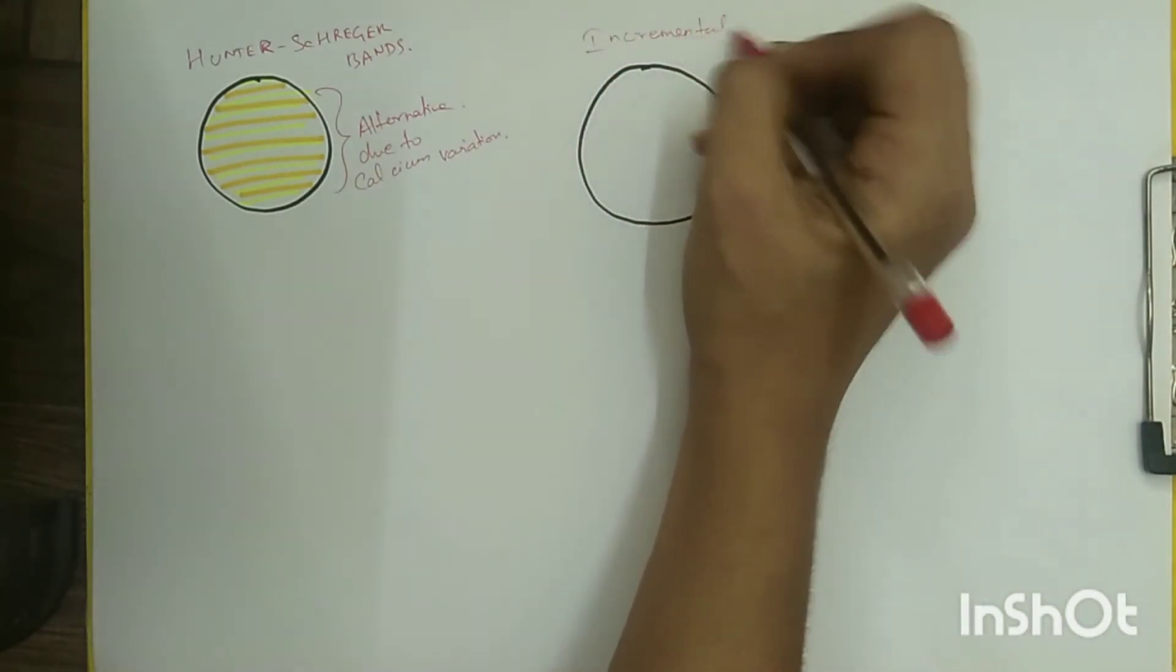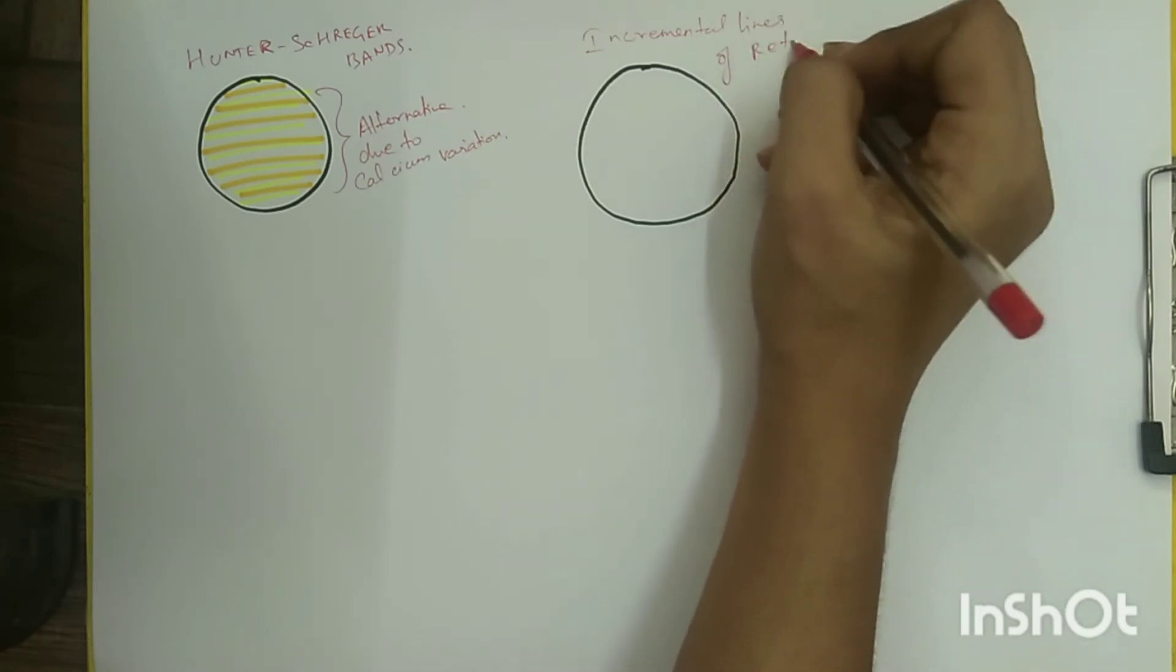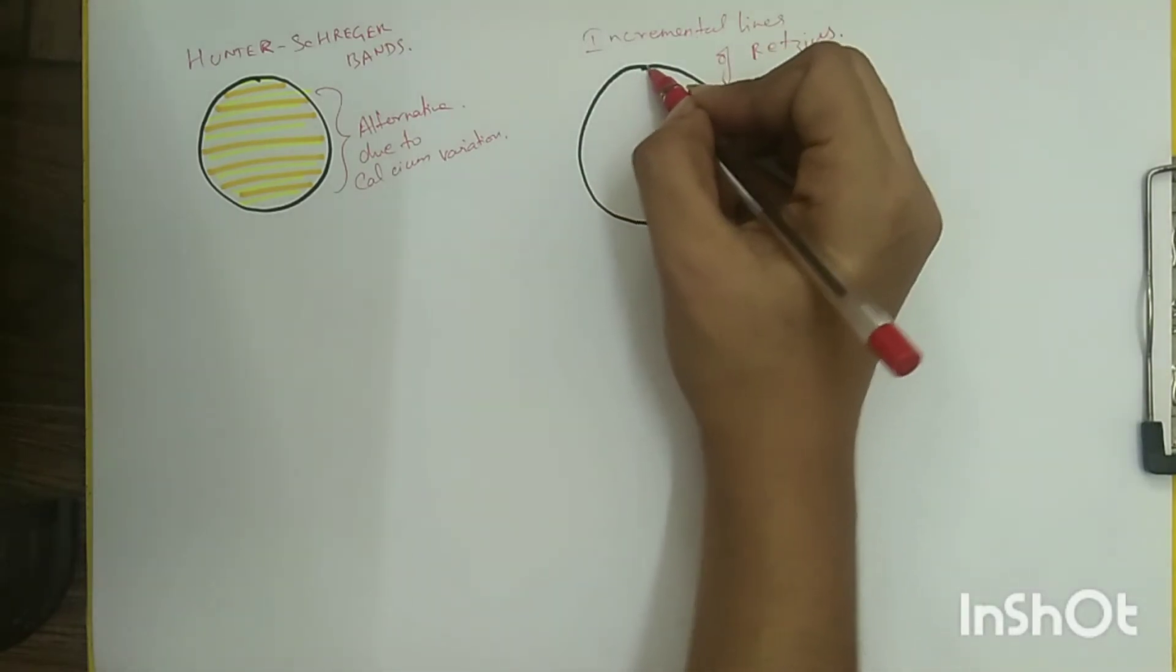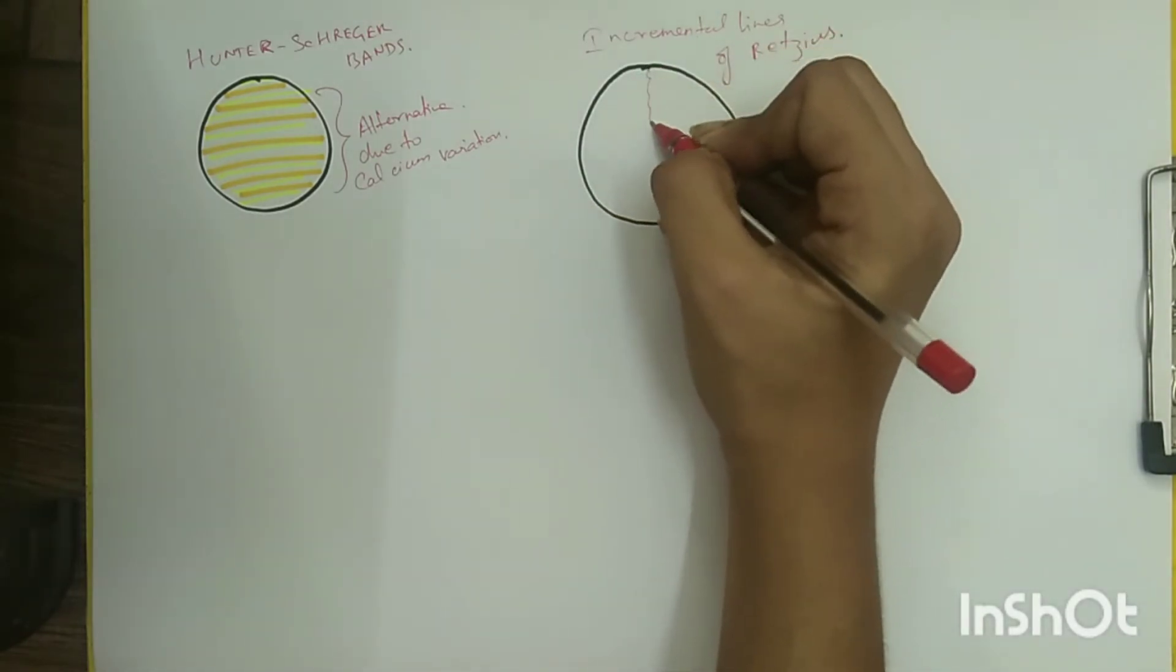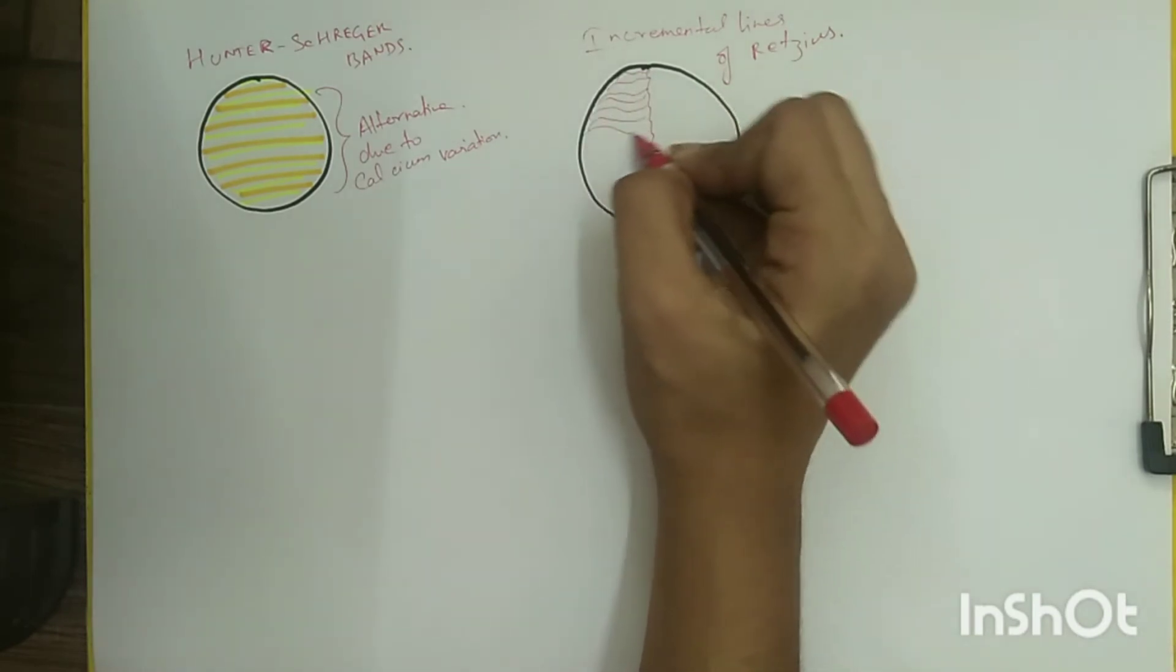Incremental lines of Retzius: these striations are thought to represent a rest phase during the formation of enamel, which are seen as a series of dark lines in enamel when ground sections of tooth are observed.